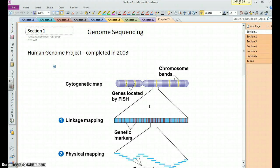Okay, so chapter 21 is about genomes and their evolution. Genomes referring to the complete set of chromosomes and genes that an organism has.